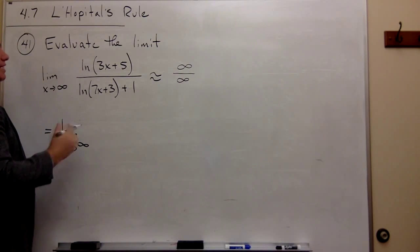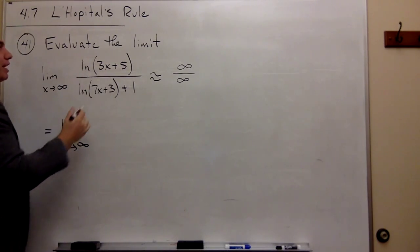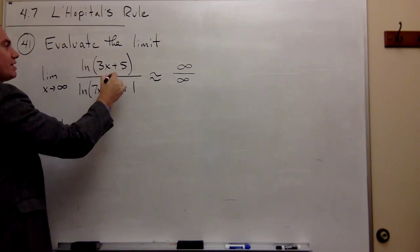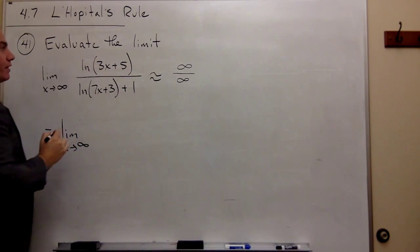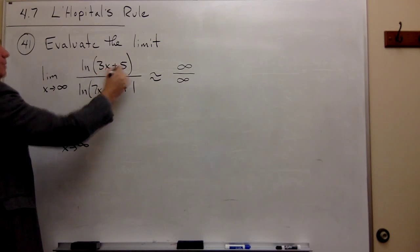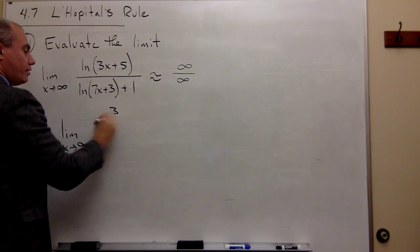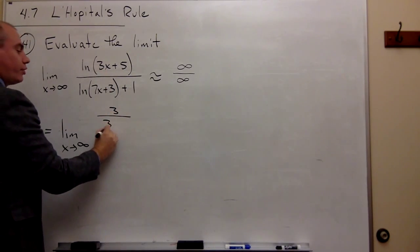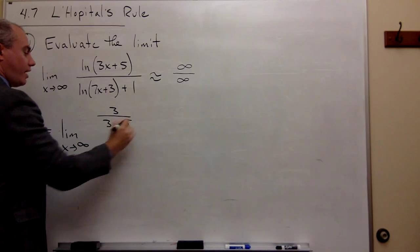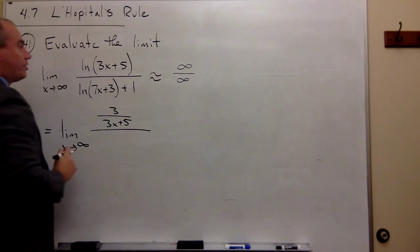It's the derivative of this thing over this thing. So the derivative of 3x plus 5 is 3, divided by 3x plus 5. That's the derivative of the top.